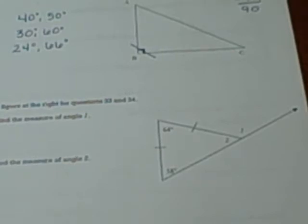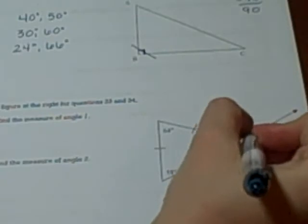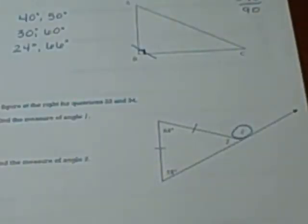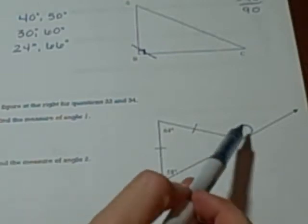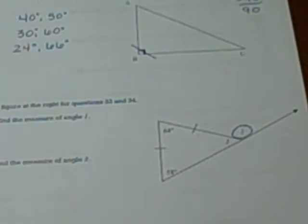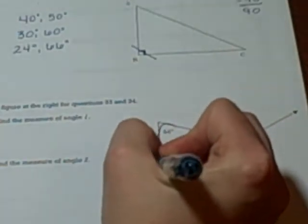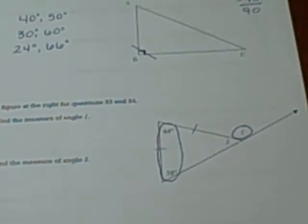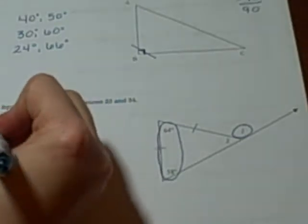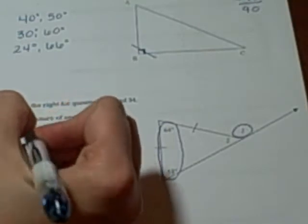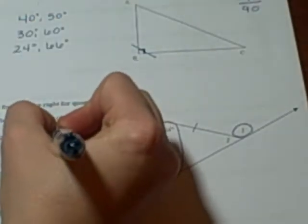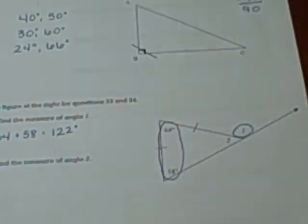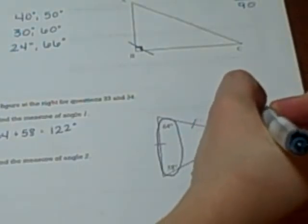Questions 33 and 34 are using this diagram here at the right. Question 33 wants us to find the measure of angle 1, which is this angle out here. I want you to think about what we learned about those exterior angles. An exterior angle is the sum of the two remote interior angles. So I should be able to add these two angles together. 64 plus 58 is 122 degrees. So I know this angle out here is 122.